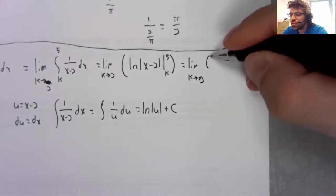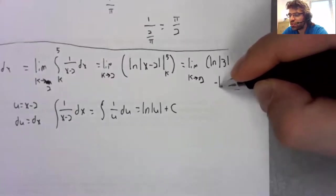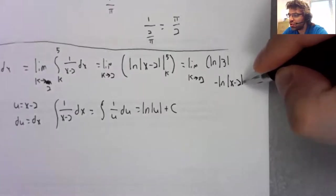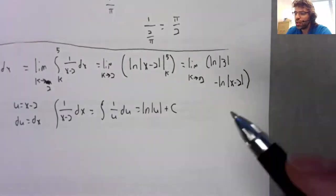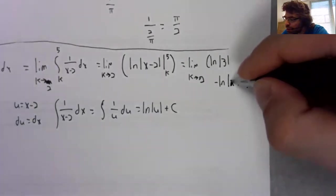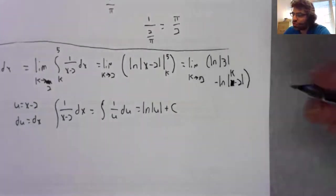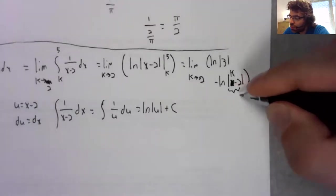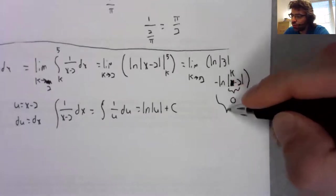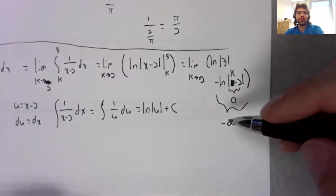So the natural log of three minus the natural log of k minus two. As k approaches two, this approaches zero. And the natural log approaches negative infinity.